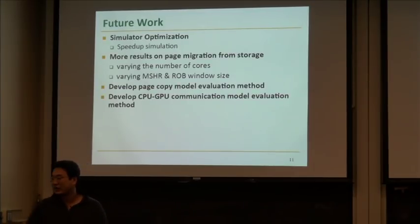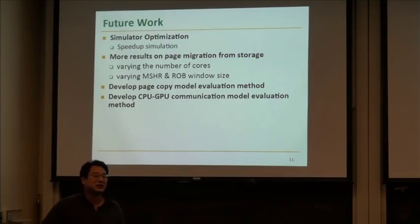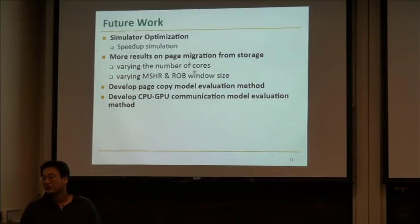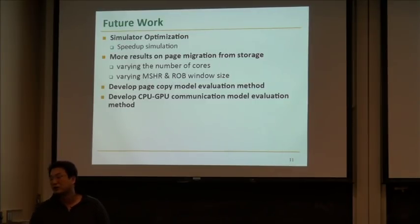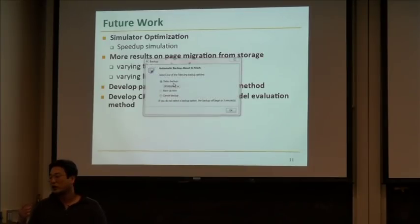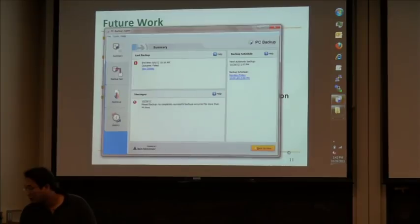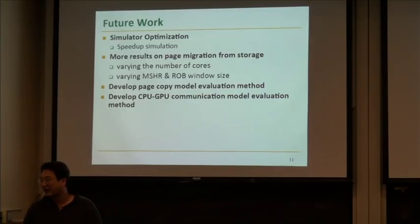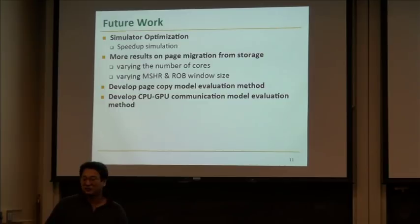For future work, simulation takes quite a long time, so I need a method to speed up simulation time. I also plan to vary the number of cores, vary the instruction window size, and vary the number of requests that can be parallelized from storage to DRAM, which I think will yield more benefit. I'll also model page copy within DRAM and the CPU-GPU communication model, both of which should show more benefit.